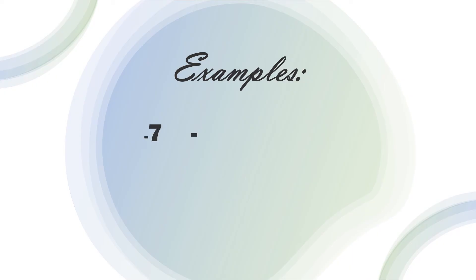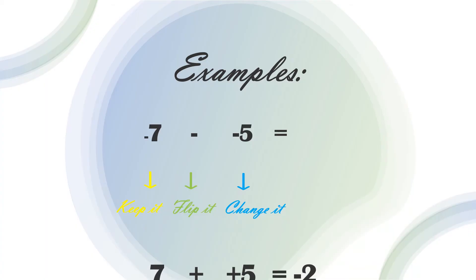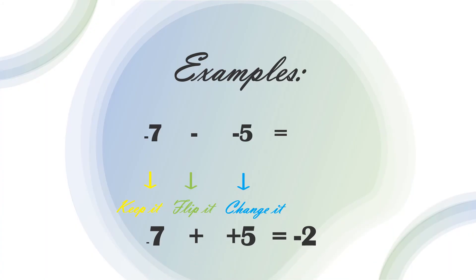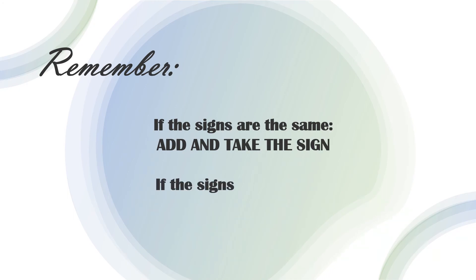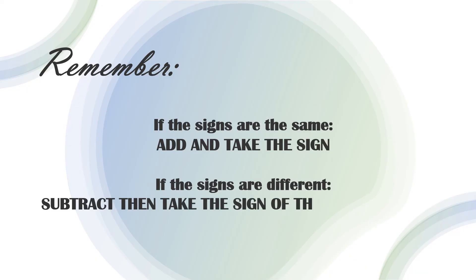Negative 7 plus negative 5 equals — keep the negative 7, flip the subtracting sign to addition sign, change negative 5 to positive 5. Negative 7 plus positive 5 equals negative 2. Remember: if the signs are the same, add and take the sign; if the signs are different, subtract then take the sign of the larger number.